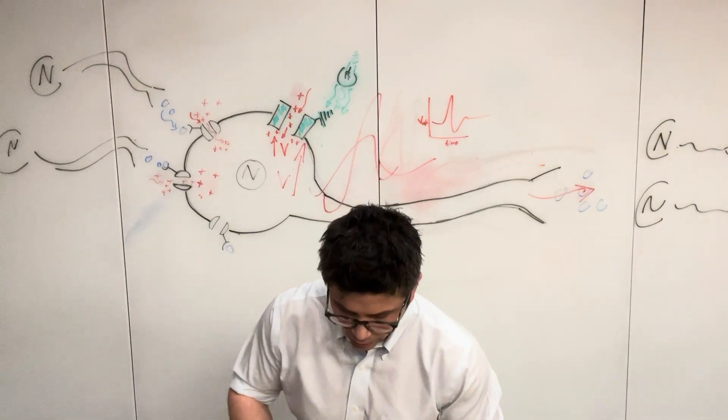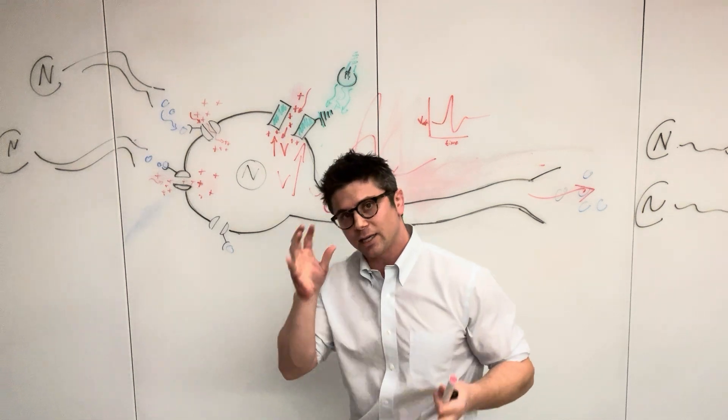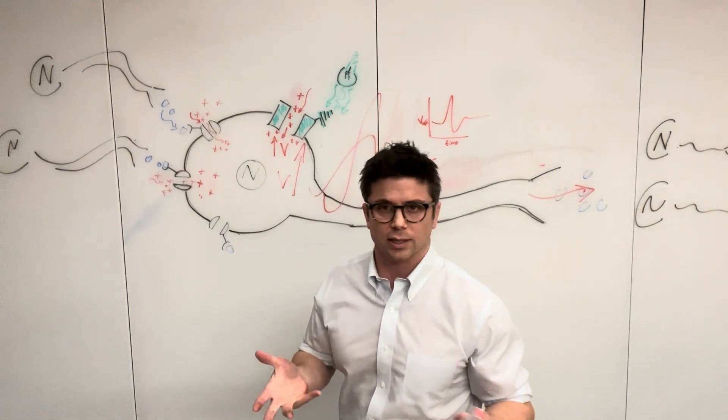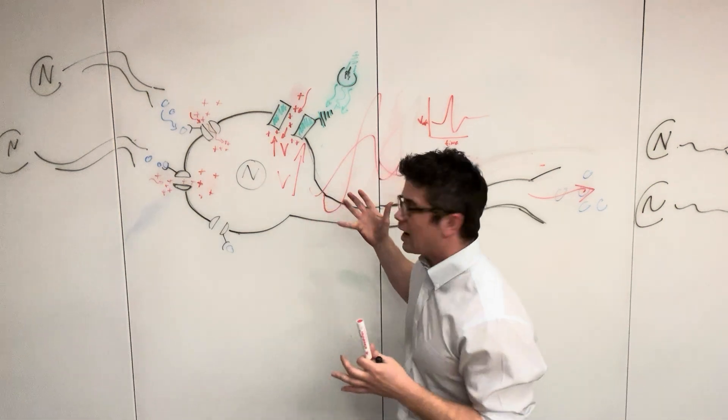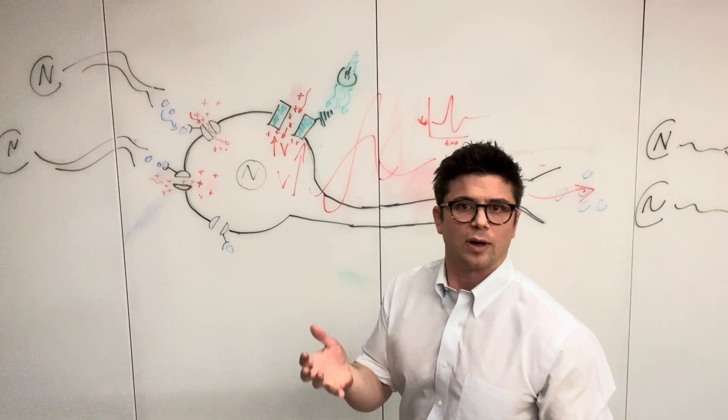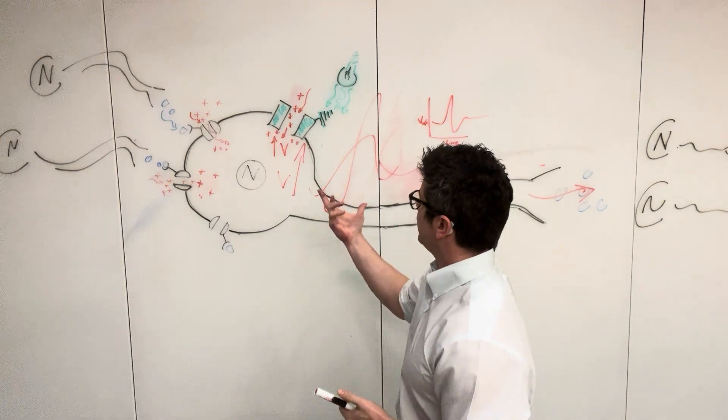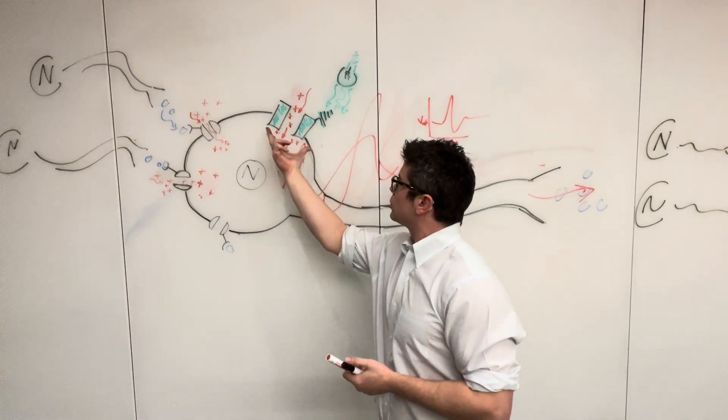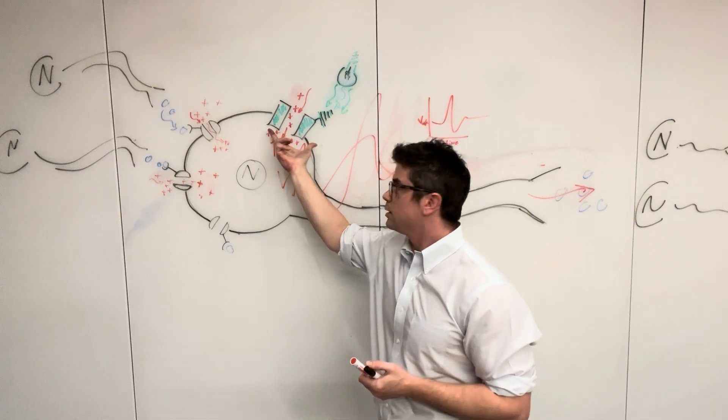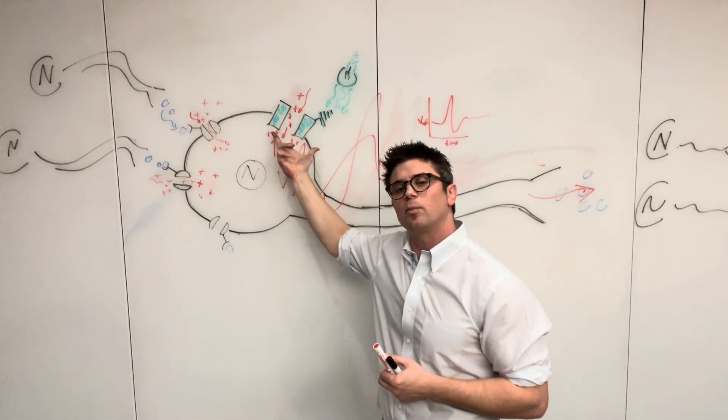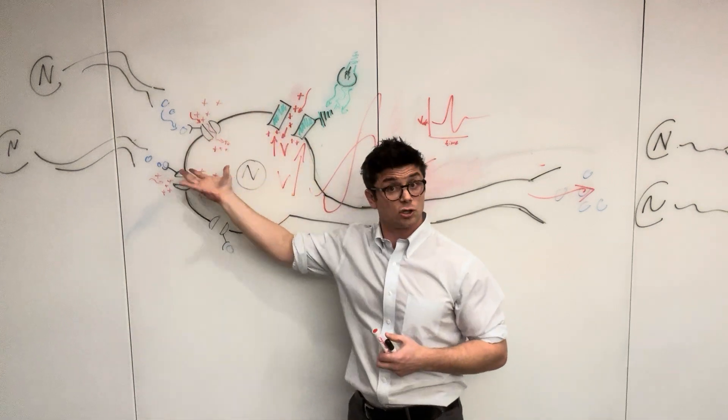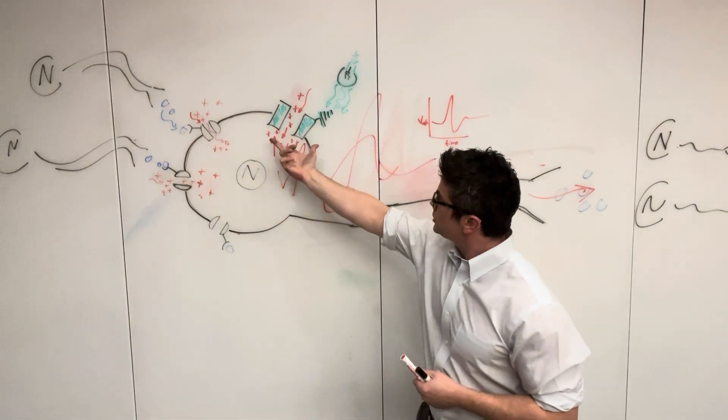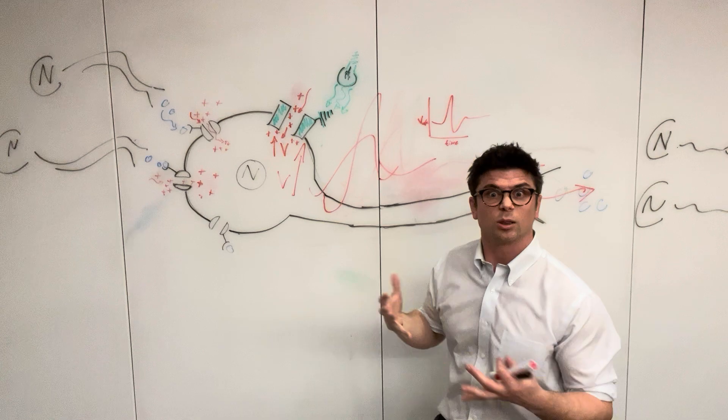And so one interesting technique that we use to study neurons and to study their action potentials and what they do is something called optogenetics. Now optogenetics, so light opto, is when we actually insert our own man-made channels into the membranes of neurons, and instead of responding to other neurons, neurotransmitters, these optogenetic channels respond to light.